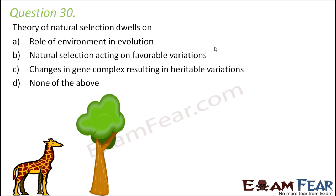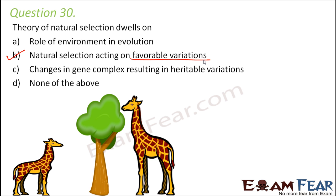Natural selection means that nature selects the best and survival of the fittest. So whichever is the best or whichever thing is favorable for that particular organism to survive, that is supported by nature. That is the basic theory of natural selection. So obviously option B would be correct because natural selection always acts on favorable variation. The example of giraffe is the perfect example.